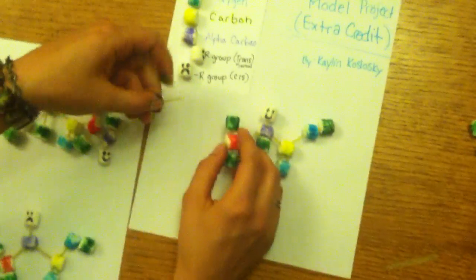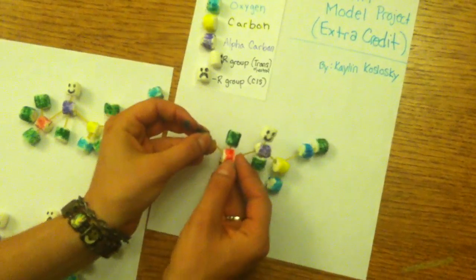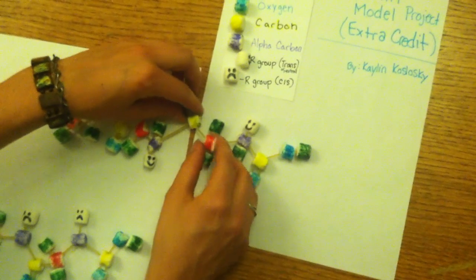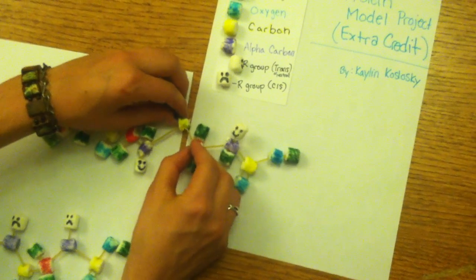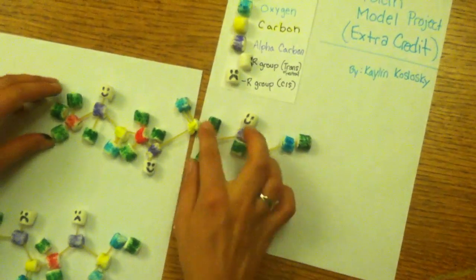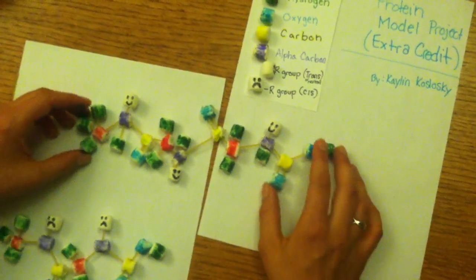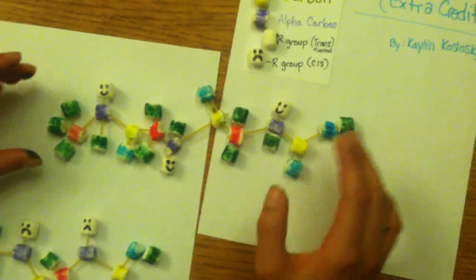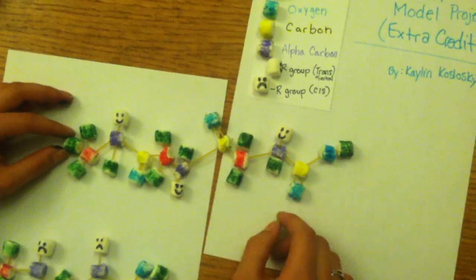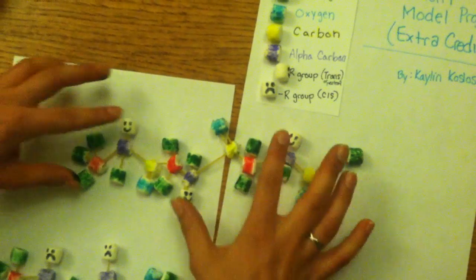And then the nitrogen forms a peptide bond with the carbon, that's now a carbonyl carbon, and now you have a longer sequence. So now I have three amino acids in my sequence, and this is all trans because the R groups are all alternating, or far away from each other.